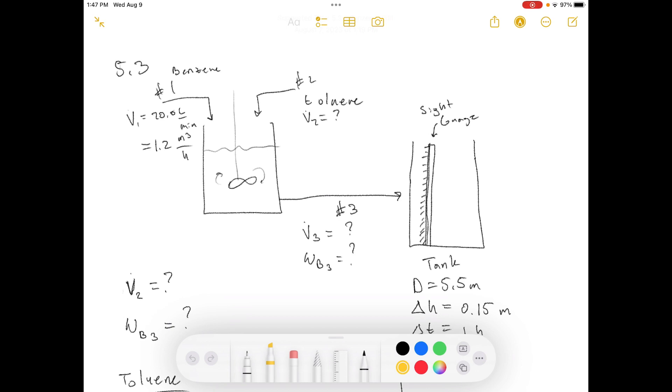One is benzene, which flows at a measured rate of 20 liters per minute, and the other is toluene.